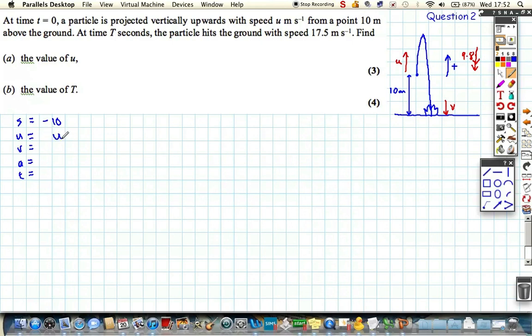It's projected upwards with the speed of U. Its final velocity, the velocity at which it hits the ground, we're told in the question, is 17.5 metres per second down. Acceleration is down due to gravity pulling it towards the centre of the earth, minus 9.8. And the time, we don't know yet. In fact, that's what we want to find out in the second part of the question.